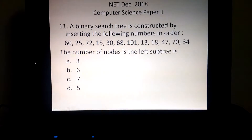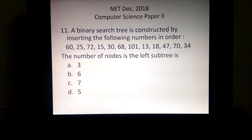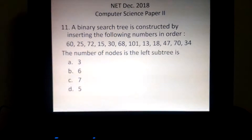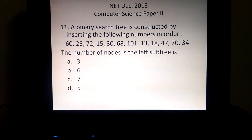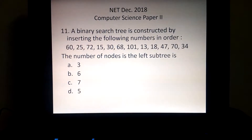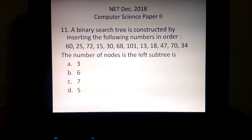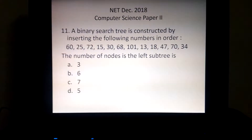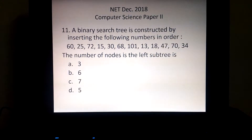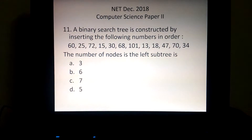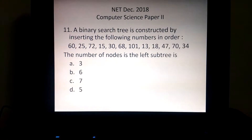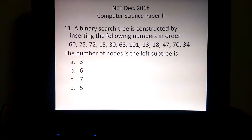The question is: a binary search tree is constructed by inserting the following numbers in order — 60, 25, 72, 15, 30, 68, 101, 13, 18, 47, 70, 34. The number of nodes in the left subtree is: option A) 8, B) 3, C) 6, D) 7, and E) 5.